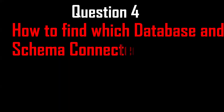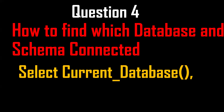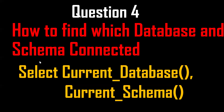The next question is: how to find which database and which schema are connected? Whenever I run any model, we should make sure where our objects are getting created. We can find this using 'SELECT current_database(), current_schema()'. This tells us where our models are getting created.